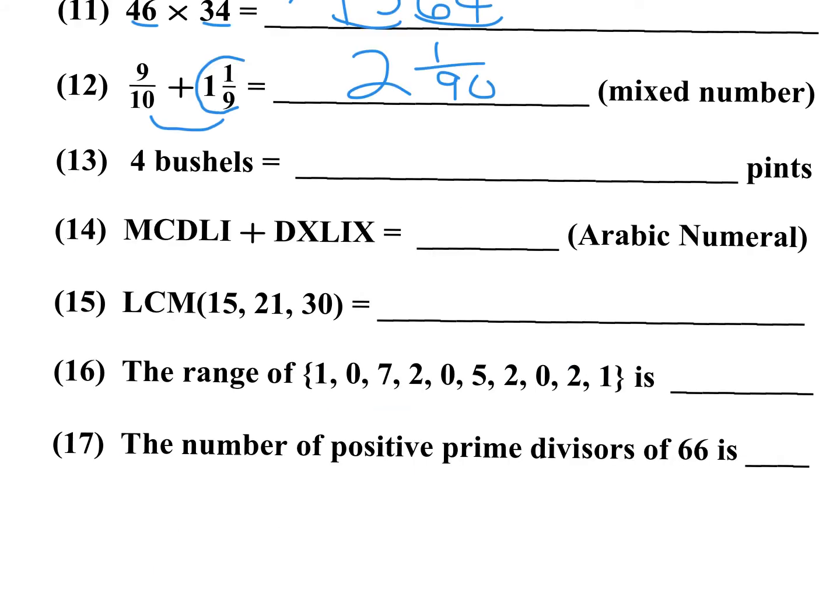Number 13: 4 bushels equals how many pints? You have to know that 1 bushel equals 64 pints. So 4 times 64 is 256. If you didn't know that 1 bushel is 64 pints, you'd likely skip this one or take a guess and move on.